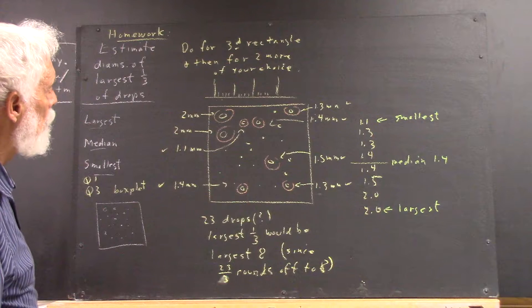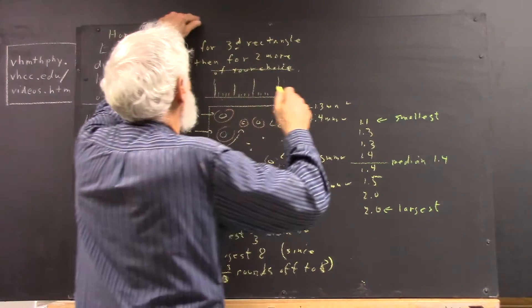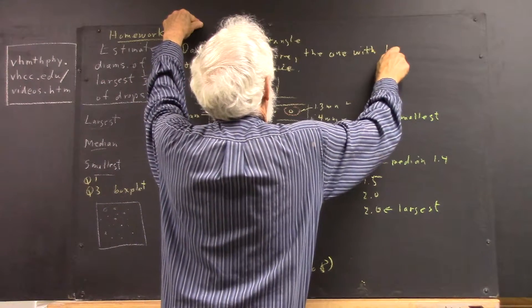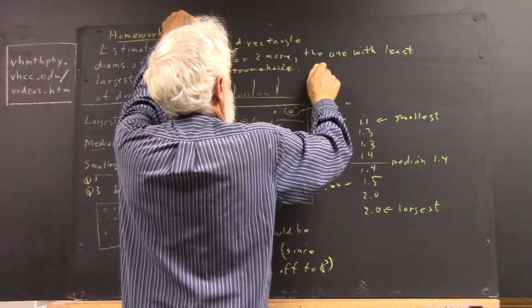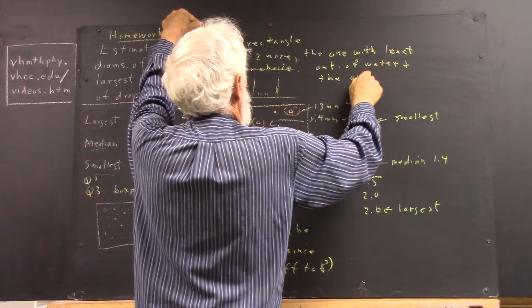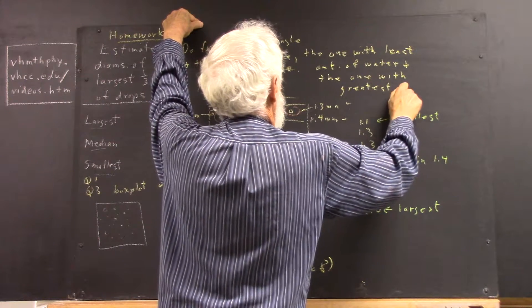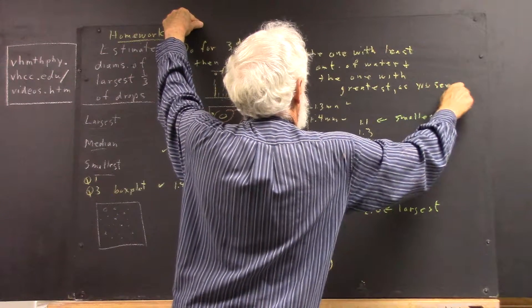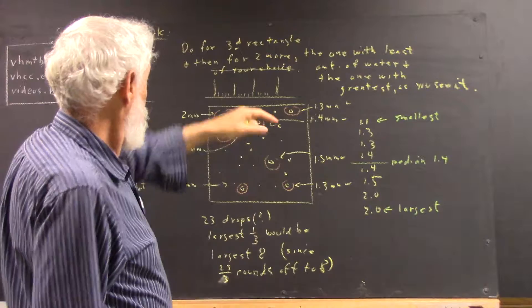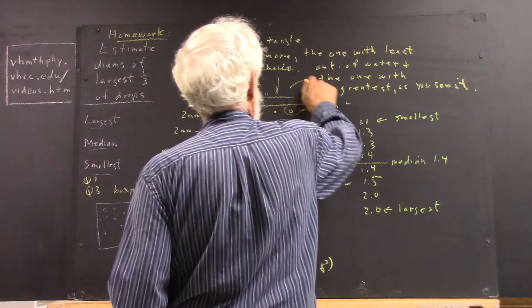And actually, I'm going to change that. I'm going to say for two more, not of your choice. The one with the least amount of water, and the one with the greatest. And if you think the third has the greatest, well, do the one with the next greatest. I want you to do two more. I want you to do one with a lot of water, one with just a little water.